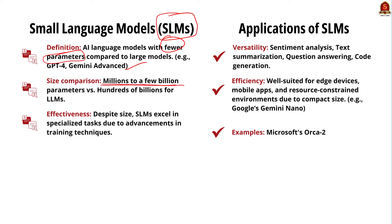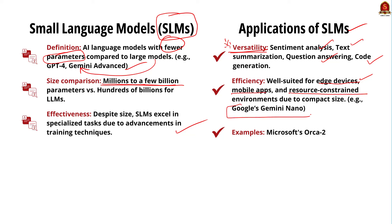Despite their smaller size, small language models are demonstrating remarkable effectiveness in specialized tasks and resource-constrained environments, thanks to advancements in training techniques, architecture, and optimization strategies. Their applications span various domains like sentiment analysis, text summarization, question answering, and code generation. The compact size and efficient computation of small language models make them well-suited for deployment on edge devices, mobile applications, and resource-constrained environments. For example, Google's Gemini Nano, featured on the latest Google Pixel phones, assists with text replies and summarizes recordings without requiring an internet connection.